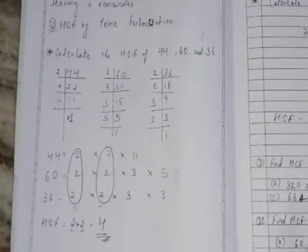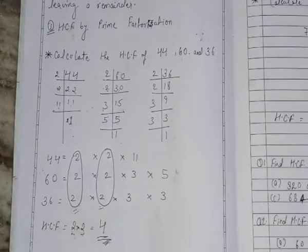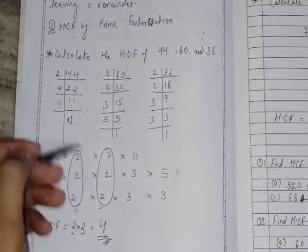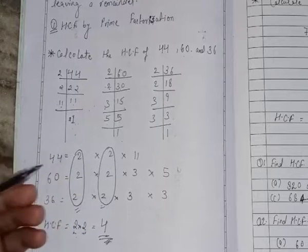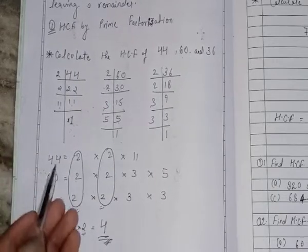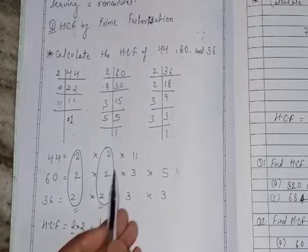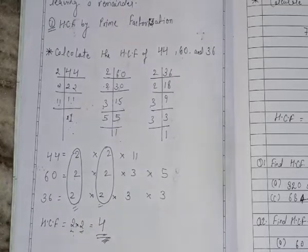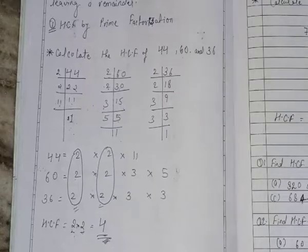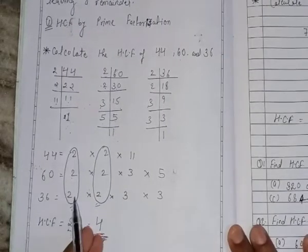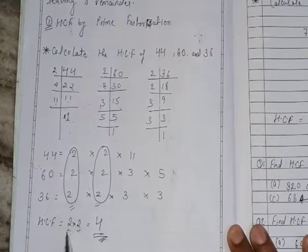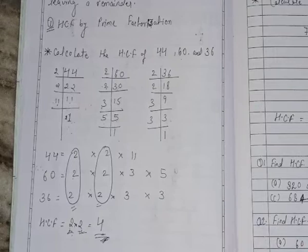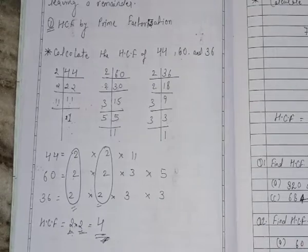We will write the factors in the form of multiplication. Now, we will take out the number common which is in all the factors. For example, 2 times 2 times 2 is in 44, 60 and 36, but none of the other numbers are common in all three. So we will take out these common and write it like this. By multiplying, we will get the HCF. So this is the method of HCF by prime factorization. I hope you understand.